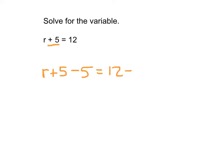And again I have to subtract 5 from the other side of the equation as well. So that's rewritten as 12 minus 5. r plus 5 minus 5. 5 minus 5 is already 0. So I'll rewrite this left-hand side of the equation as r plus 0. 12 minus 5 is 7.